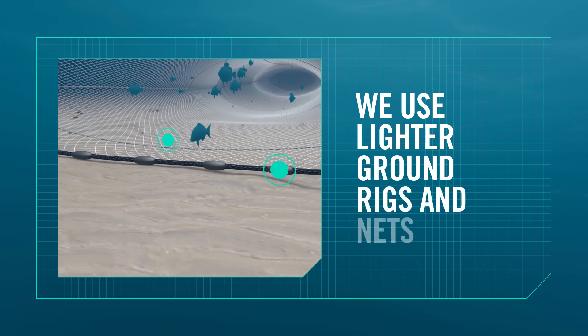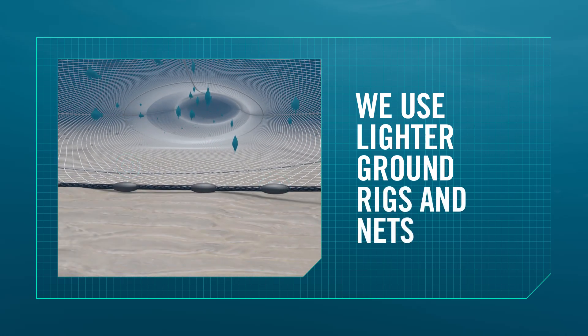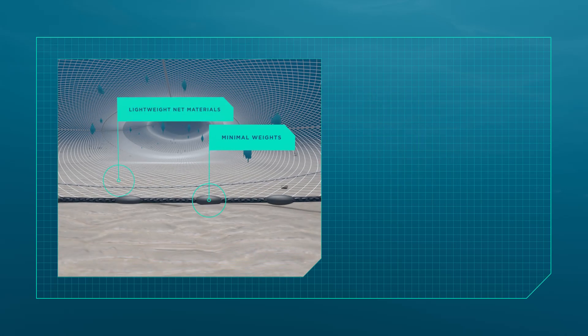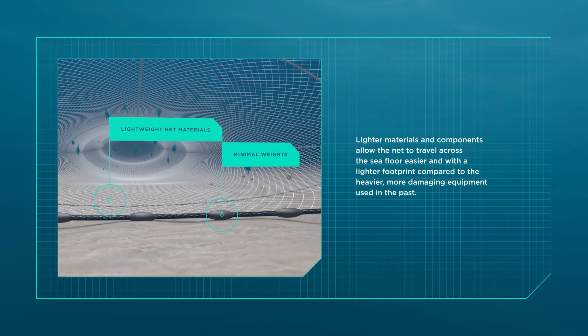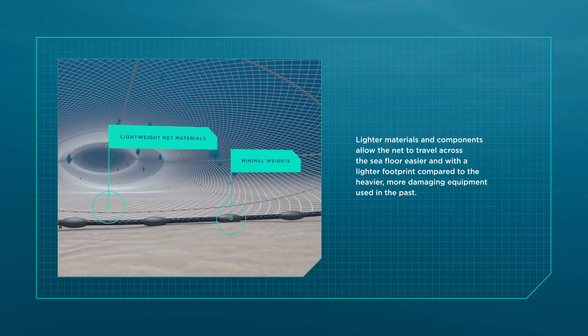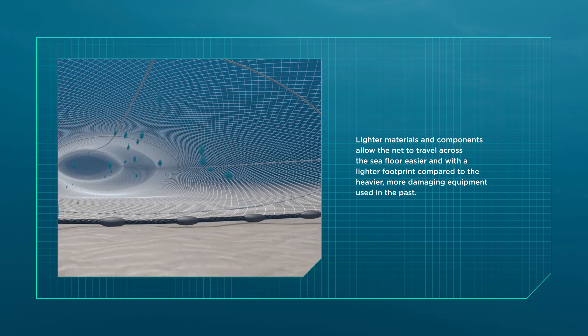Another update is that we now use more lighter materials and components in our ground rigs and nets and we minimise use of weights. This allows the net to travel across the sea floor easier and with a lighter footprint compared to the heavier, more damaging equipment used in the past.